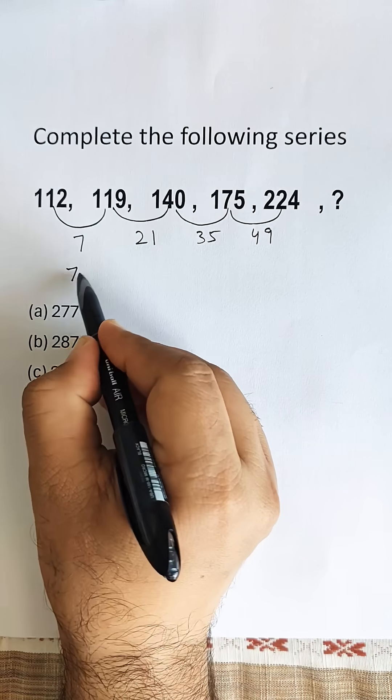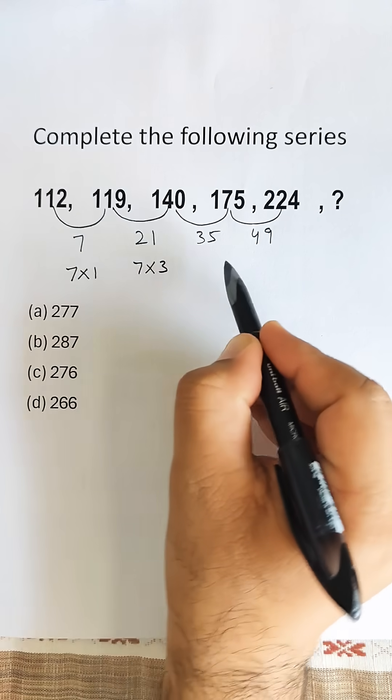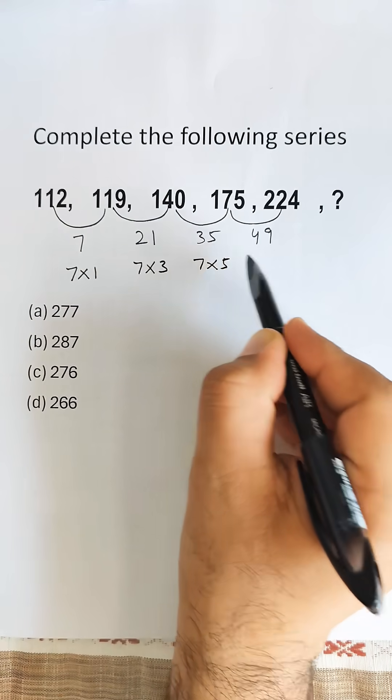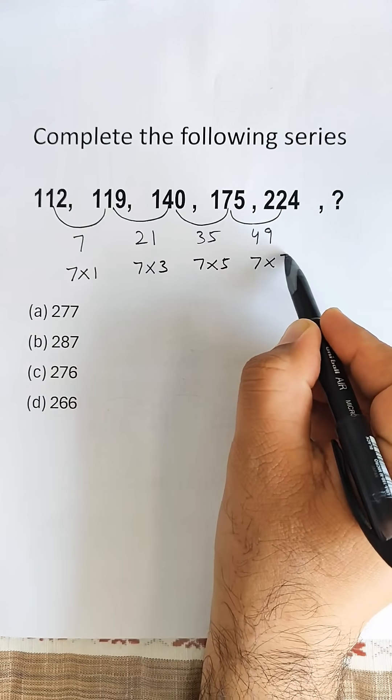We notice these differences follow a pattern: 7 times 1, 7 times 3, 7 times 5, and 7 times 7.